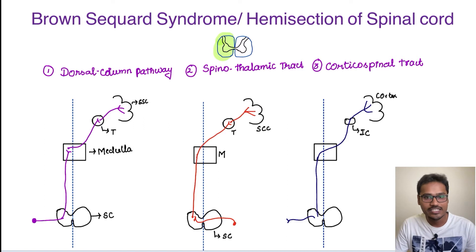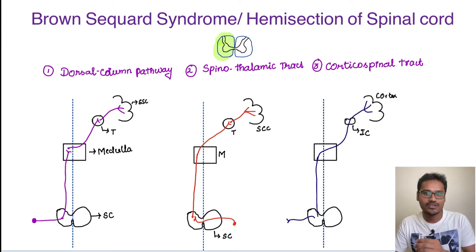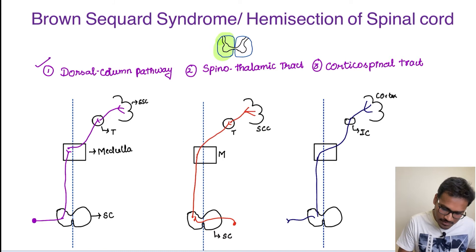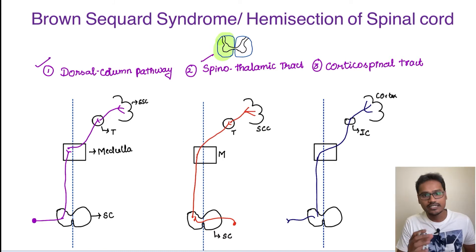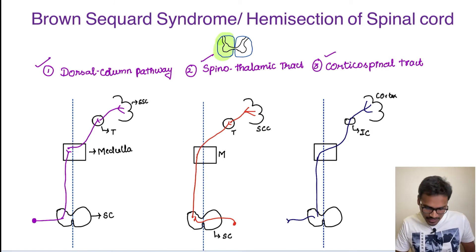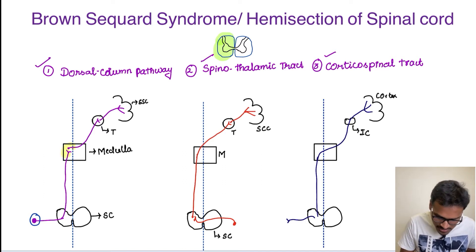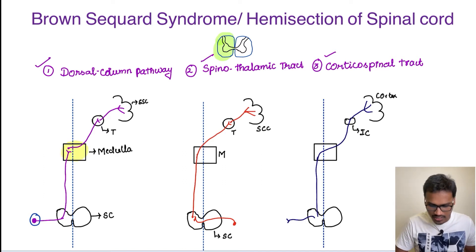Let's try to understand all the features. We have ascending tracts passing through the spinal cord as well as descending tracts coming to the spinal cord — both of them will be affected. Let's understand which are affected on the same side and which are affected on the opposite side. The dorsal column starts from the periphery and goes all the way to the medulla, and the crossing over happens in the medullary region.